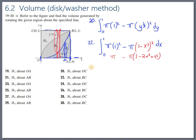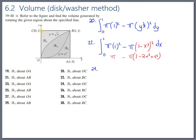Let's move on to 24. For number 24, we're going to rotate region 2 — the uppermost, almost triangular chunk — around OC, which is the y-axis. Since we're rotating around the y-axis, we draw a typical rectangle perpendicular to the axis of rotation, which means we are going to be doing this in terms of y, so we'll write a dy integral.